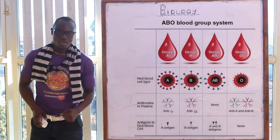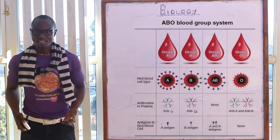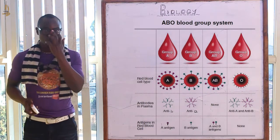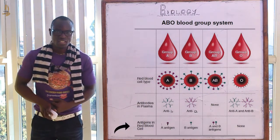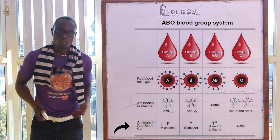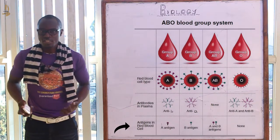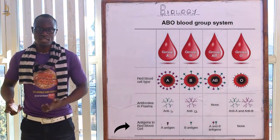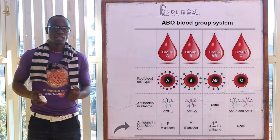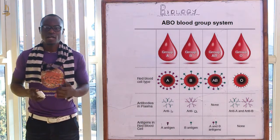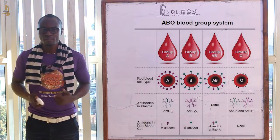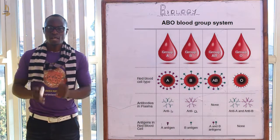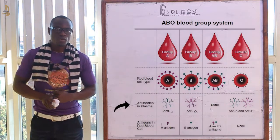Welcome to this class where we are going to discuss blood groups. Red blood cells have a protein called antigen on their surface, and the antigen determines the specific blood group of a person. Blood with antigen A is classified as blood group A, blood with antigen B is classified as blood group B, blood group AB has both A and B antigens, and blood group O does not have any antigen.